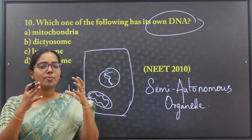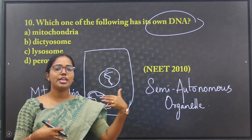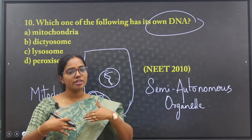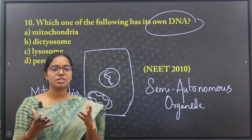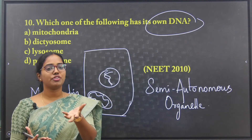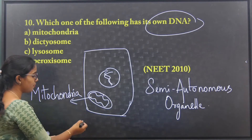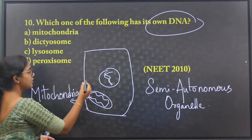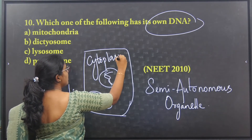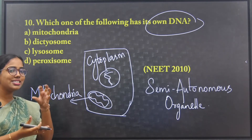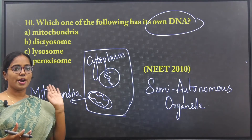Even in genetics, mitochondrial inheritance takes place from the mother to the children — be it son or daughter. In the fertilization event, the cytoplasm is given by the female, not the male. The male gives only the genetic material, while mitochondria are present in the cytoplasm contributed by the mother.